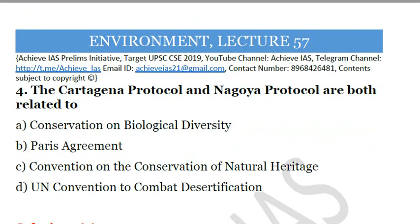The fourth question: the Cartagena Protocol and Nagoya Protocol are both related to — A. Conservation of Biological Diversity, B. Paris Agreement, C. Convention on the Conservation of Natural Heritage, D. UN Convention to Combat Desertification. The answer is A, conservation of biological diversity. The Nagoya Protocol is related to the convention on benefits arising from genetic resources, and this is related to the Convention on Biological Diversity.